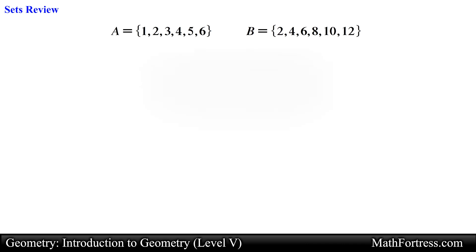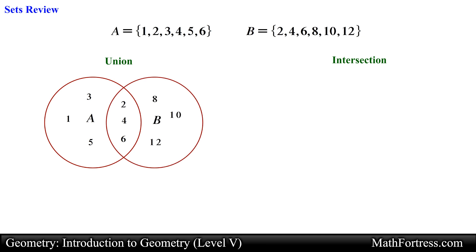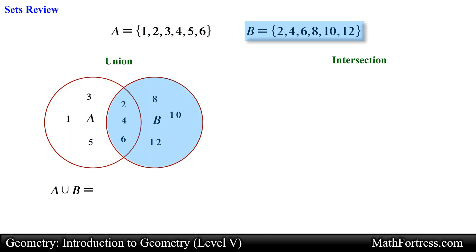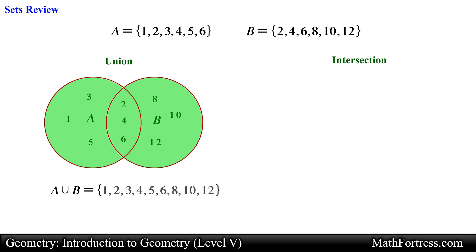When dealing with sets we are often asked to find the union or intersection between two or more sets. If we are asked to find the union between set A and B we would denote it as A union B. This symbol is pretty easy to remember since it resembles the letter U for union. In essence, the union between two sets consists of all the elements in A, or in B, or in both. You can think of a union as the process of merging the elements of both sets together. A union B will equal a new set that contains every element that is in either set A or set B, including those elements that are common to both.